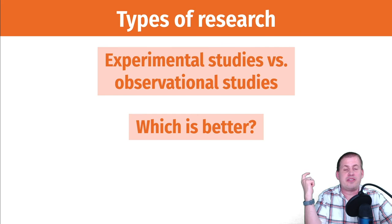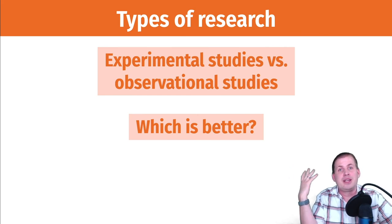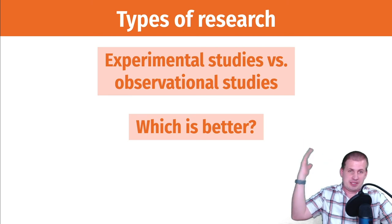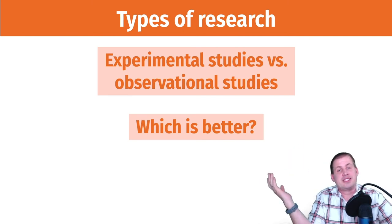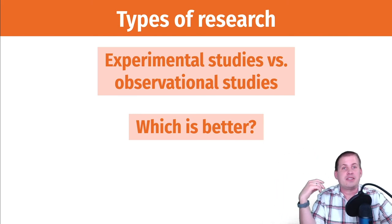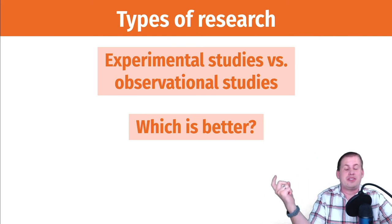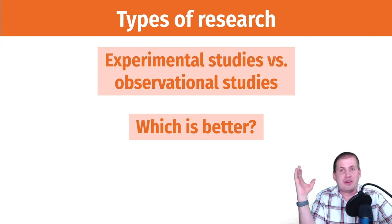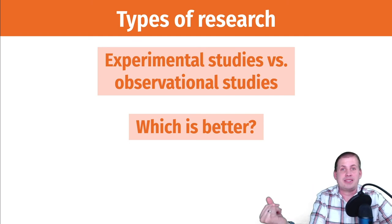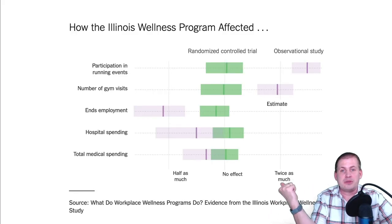If you're trying to find causal effects, which is better? Before you take this class, experimental studies seem like the only way to go. After this class, you'll realize that observational studies can also work for finding causal effects — but they have to be done well, with specific strategies to isolate the pathway between treatment and outcome. Otherwise, they'll be wildly biased and incorrect.